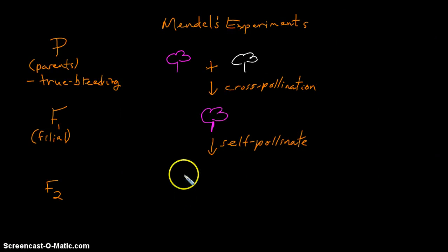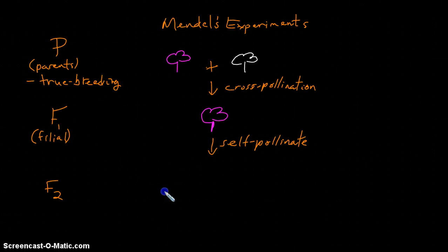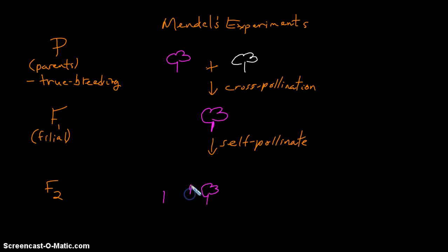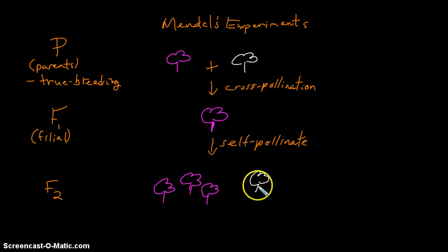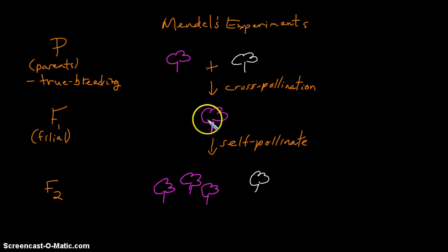When that happened, he was able to get some offspring that were purple in color. But then that white flower color that had disappeared in the F1 generation reappeared in the F2 generation. Rather than this blending of traits...